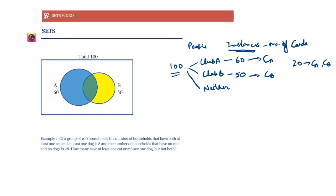When we say instances, we are talking about the number of cards, not the number of people. Instances could be more than the number of people, or actually less — say if most people don't belong to any club. But these are different things. We have only 100 people, but 110 instances, because the total number of cards is 60 plus 50, that is 110.